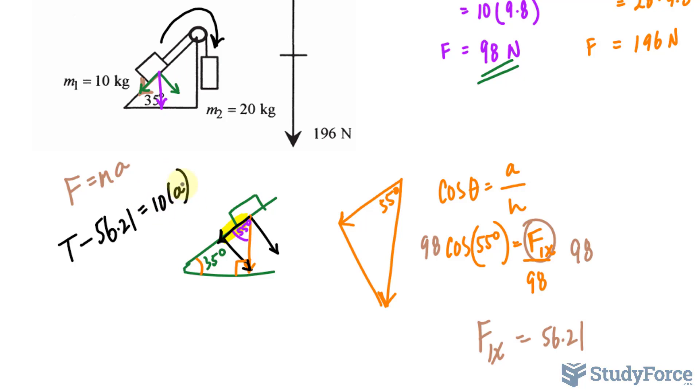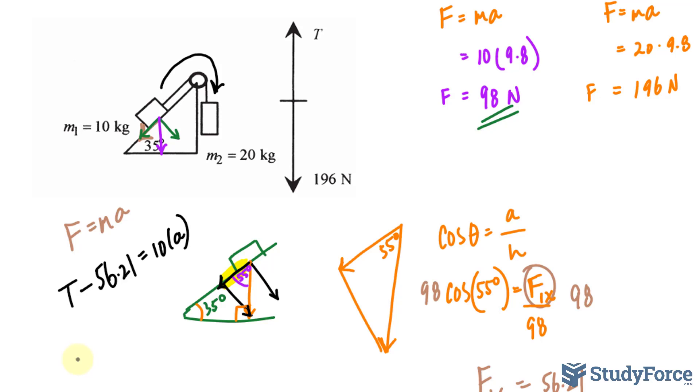And similarly, I can do the same thing for this, where I can write down 196 minus the tension equals the mass of 20 kilograms, remember mass times acceleration, and the acceleration is what we're looking for. Remember, it is a system, they are connected, so it's one acceleration.